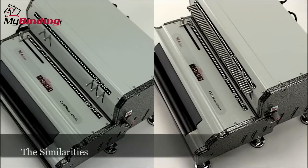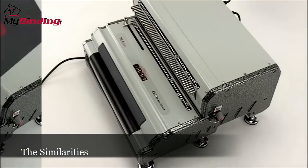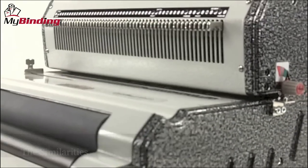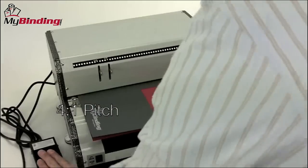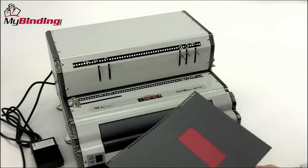Those are the differences. Now let's look at the similarities between the two models and why the EPI is the top of the line. Both machines punch at a 4 to 1 pitch and have a punching length of 13 inches.